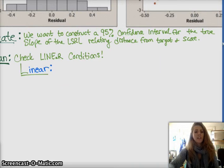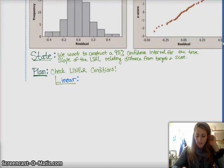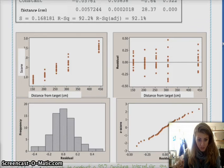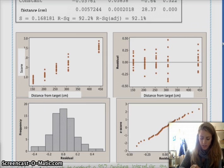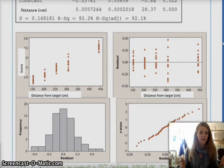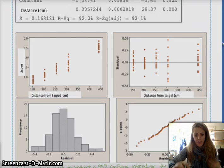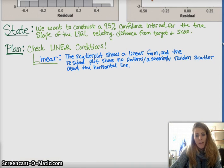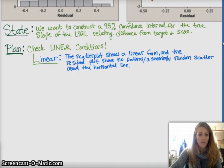Linear. Does the function, does the graph look approximately linear? And so, you go back to your scatter plot and residual. You have to mention both to get full credit. You talk about there seems to be a linear relationship between these two variables, and since there's no major, you don't see any patterns in the residual, then you think a line is the best fit for this data. So, you'd say something like this. Scatter plot shows a pretty clear linear form, and the residual plot shows no patterns or a seemingly random scatter about the horizontal line.